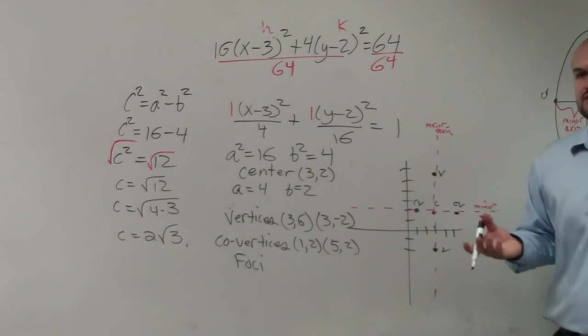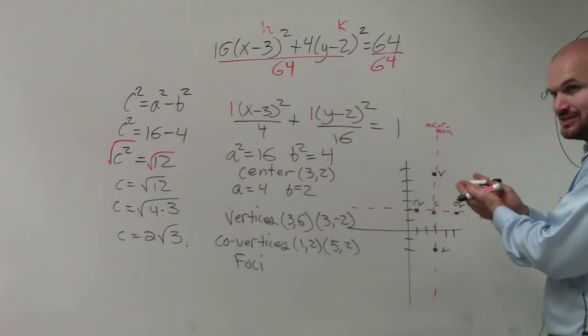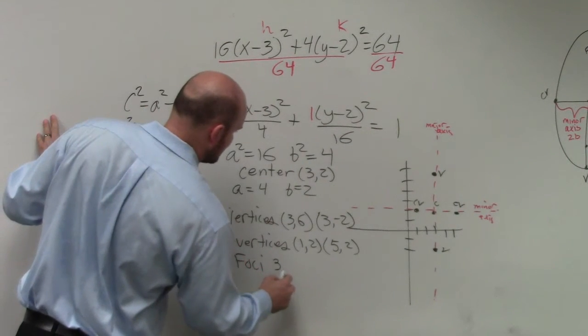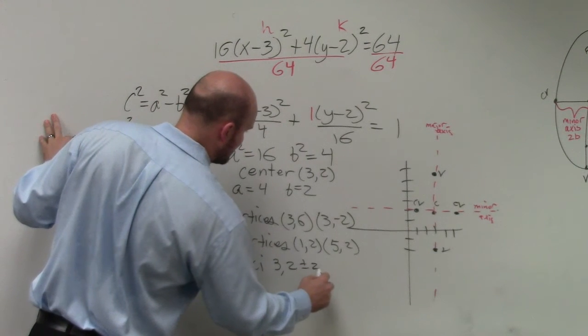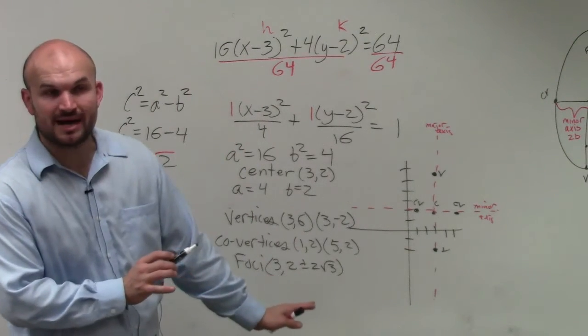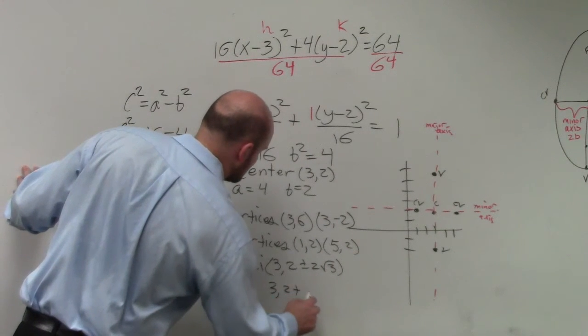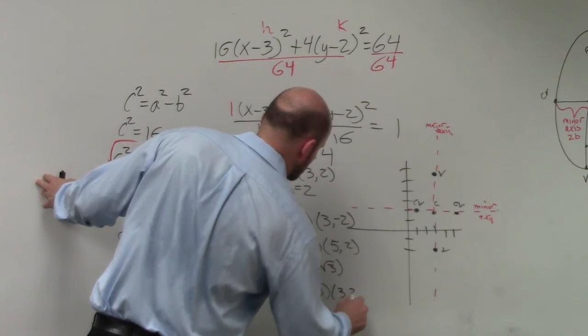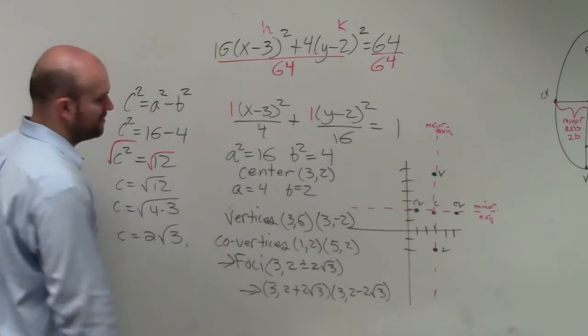Then we take our center and add the value of c to the top and bottom. So I'd write my center as 3 comma 2 plus or minus 2 square root of 3. Or if you wanted to write it out, it would be 3 comma 2 plus 2 square root of 3 and 3 comma 2 minus 2 square root of 3. Either way is perfectly fine.